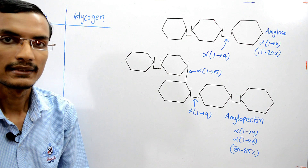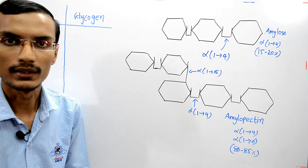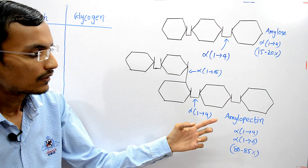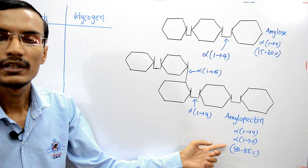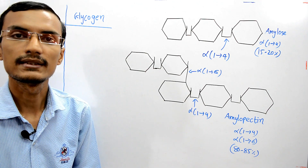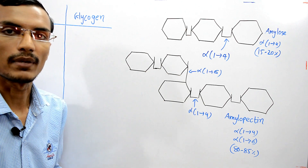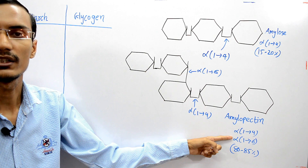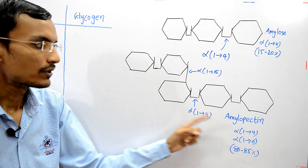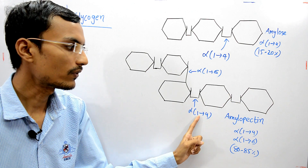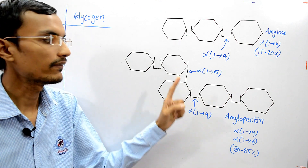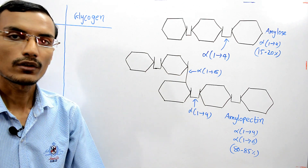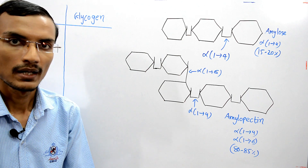Amylopectin is the branched component and it is water-insoluble. The amount of amylopectin is 80 to 85% in starch. Since it is a branched component, both alpha 1-4 and alpha 1-6 glycosidic bonds are present. In the linear chain, alpha 1-4 glycosidic bonds are present, and at branch points, alpha 1-6 glycosidic bonds are present. The structure of glycogen is similar to amylopectin, but it is more branched.